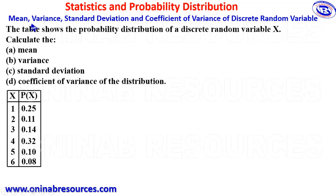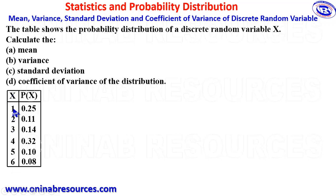We have our problem here. The table shows the probability distribution of a discrete random variable x. We need to calculate the mean, variance, standard deviation, and coefficient of variance of the distribution. The table has the discrete random variable on the first column, taking values 1 to 6, and the probability of each of the random variables.